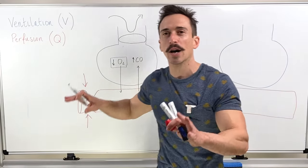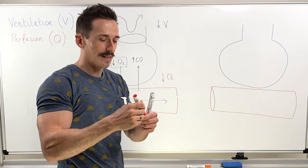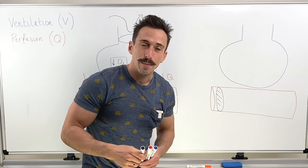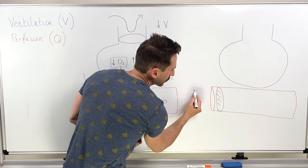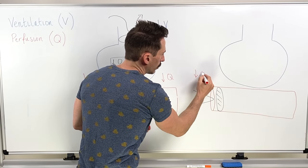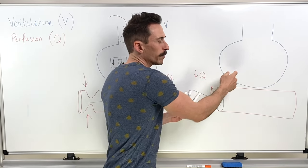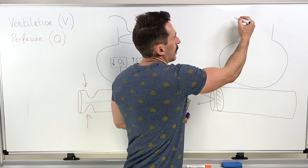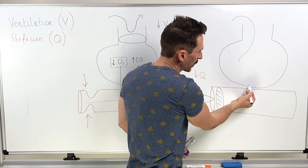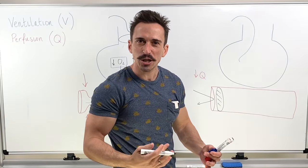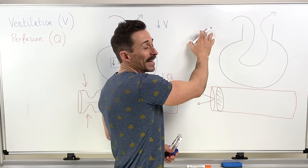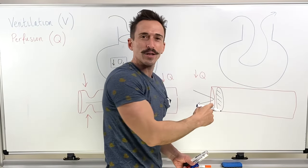Now let's look at an example where there's not a blockage in the alveolus but a blockage at the blood vessel itself. We've got a blockage here. Is the blood moving past? No. So perfusion drops. What's happening at the alveolus is that gas is coming in — but there's no blood going past, so we can't exchange anything. Gas goes in and gas goes out, meaning whatever the concentration of gas is in the atmosphere ends up being the concentration inside the alveolus.